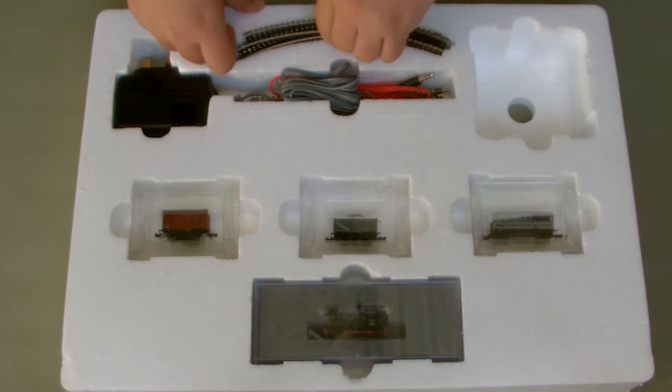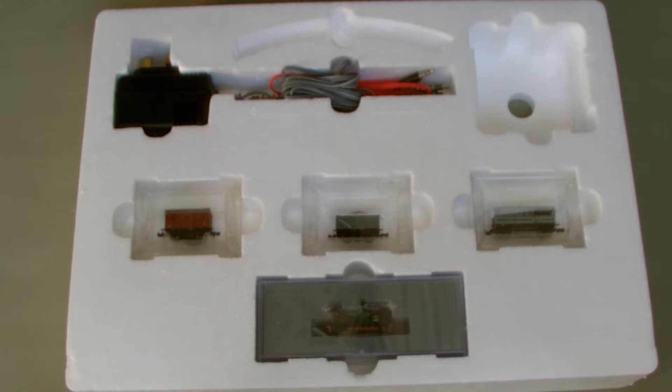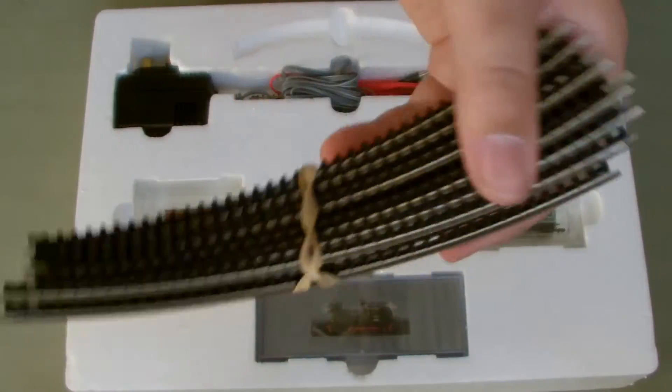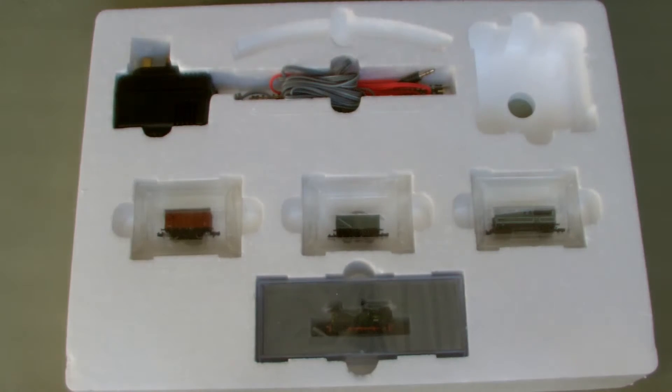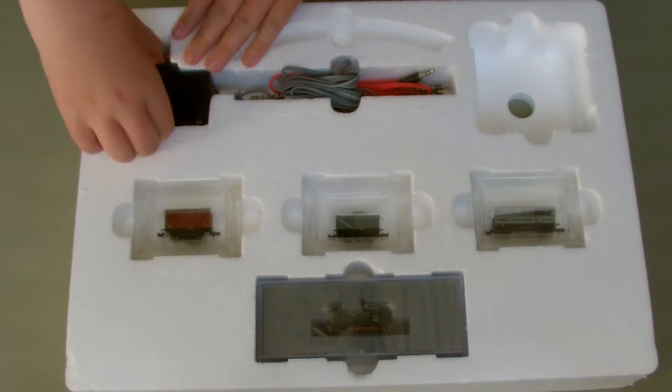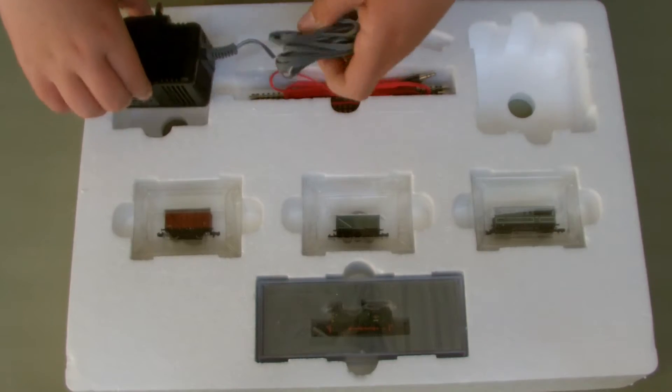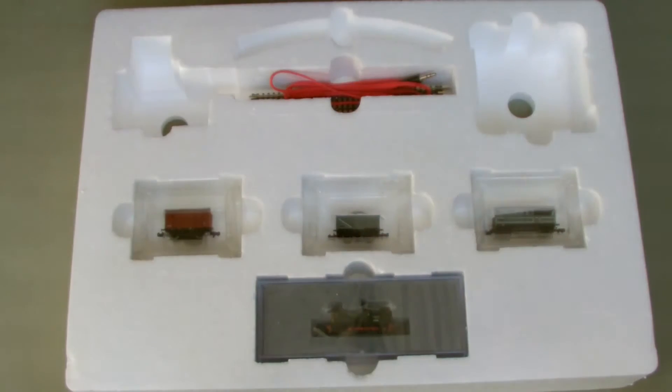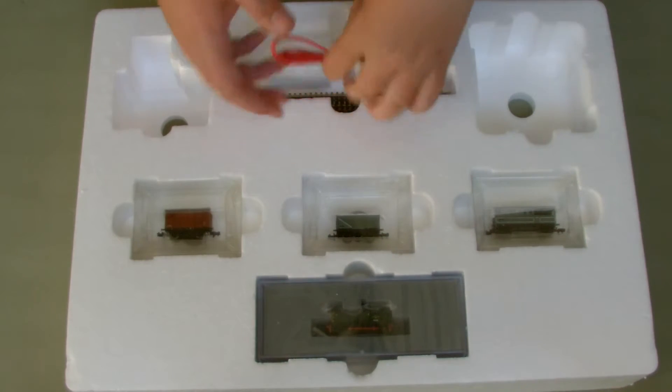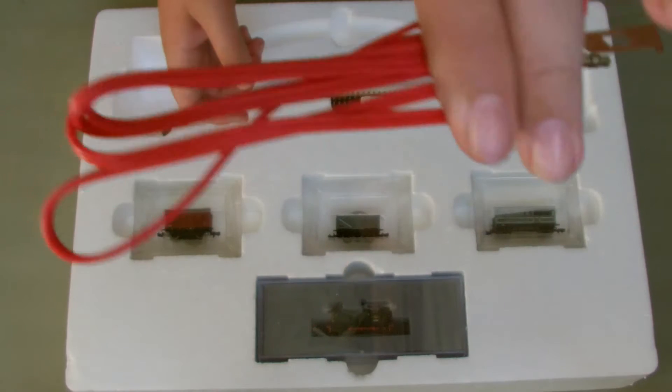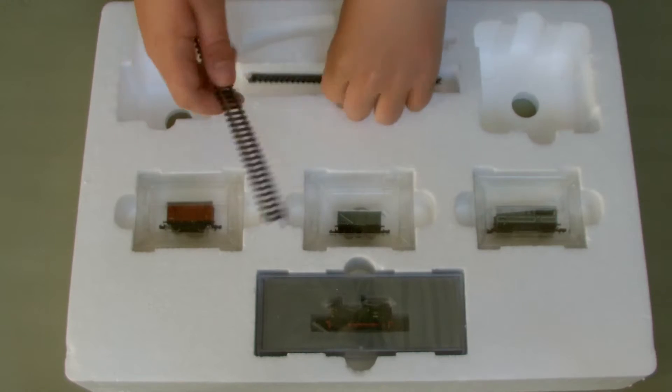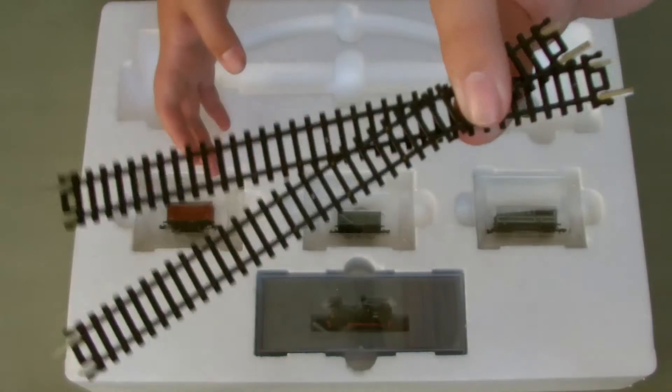Next, eight curves that you get in pretty much any train set, OO or N-gauge. We then have in this corner the transformer. No it's not Optimus Prime but it's okay, it does the job. Track wire and then two bits of straight track.